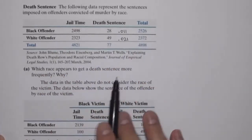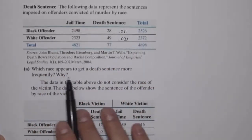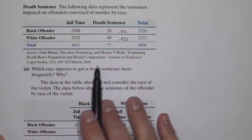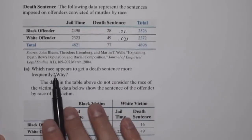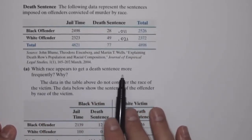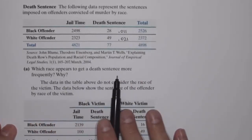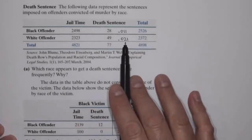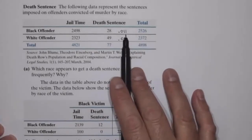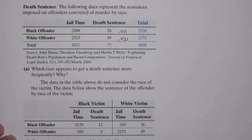So based on this result, it would appear that white offenders are sentenced to death more frequently. That is the answer to Part A — white offenders received the death sentence more frequently, because it's 2.1% of white offenders versus 1.1% of black offenders.